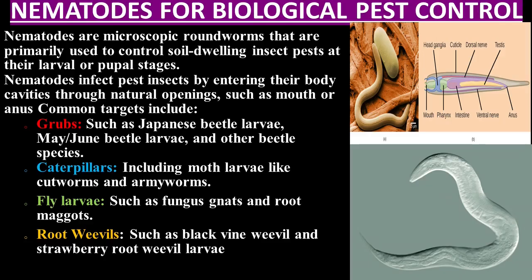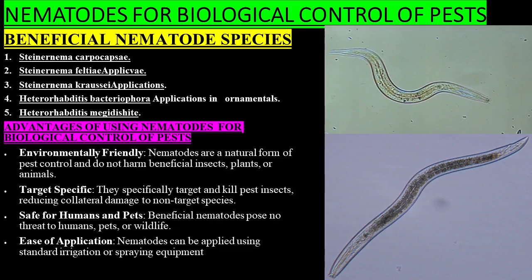Nematodes for biological pest control: nematodes are microscopic roundworms primarily used to control soil-dwelling insect pests at their larval or pupal stages. Nematodes infect pest insects by entering their body cavities through natural openings such as the mouth or anus. Common targets include grubs such as Japanese beetle larvae. Advantages: nematodes are environmentally friendly and do not harm beneficial insects, plants, or animals. They specifically target pest insects, reducing collateral damage to non-target species. Beneficial nematodes pose no threat to humans, pets, or wildlife, and can be applied using standard irrigation or spraying equipment.